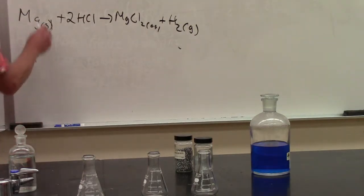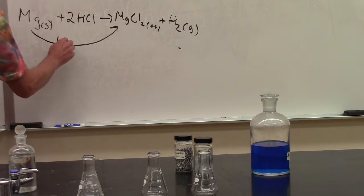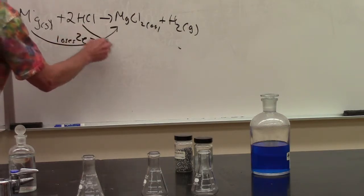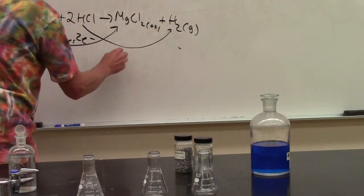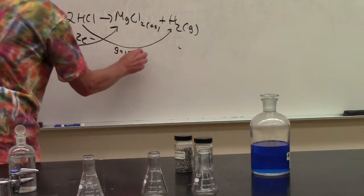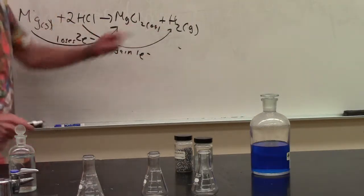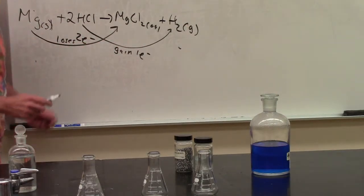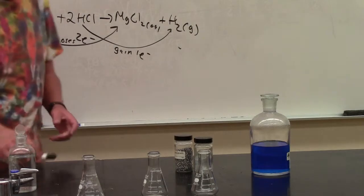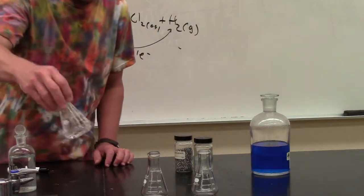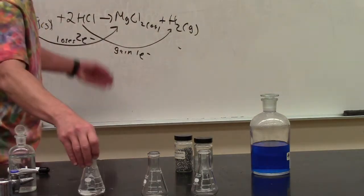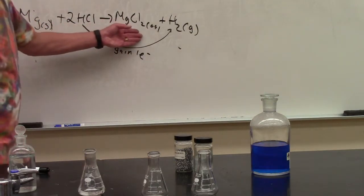So the magnesium here is going to give up two electrons, and each hydrogen is going to gain one electron. But we have two hydrogens, so the electrons lost and transferred to the gain is the same. And that's always the case. Many metals will do that. You can see we no longer have any solid in this flask. Magnesium chloride is a soluble salt.